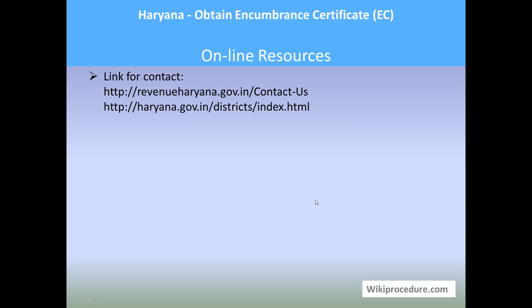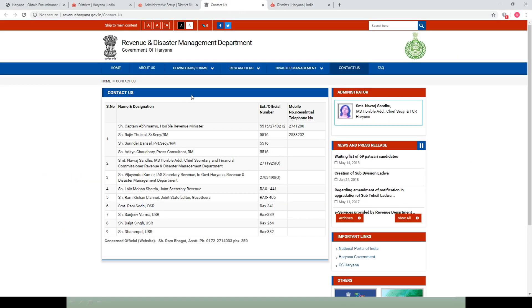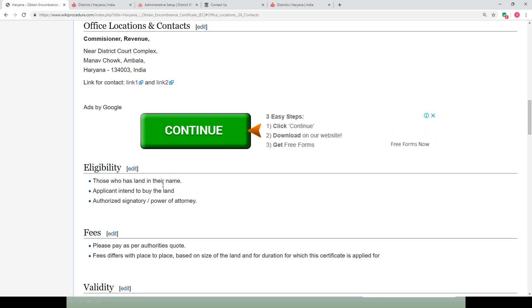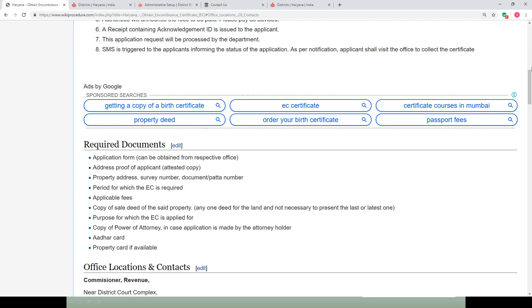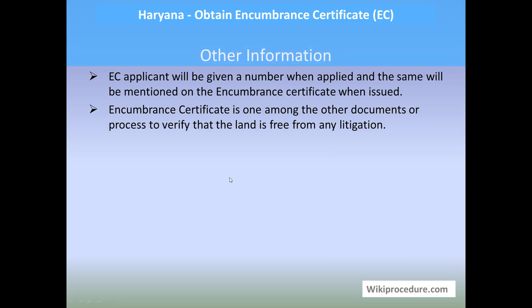Online resources are useful to directly access these websites. In our wikiprocedure page, we have provided these websites as links at appropriate places to save you valuable time. Other information: The applicant will be given a number while applying. The same number will be mentioned on the encumbrance certificate. Among the other documents processed, it is used to verify that the land is free from any litigations.